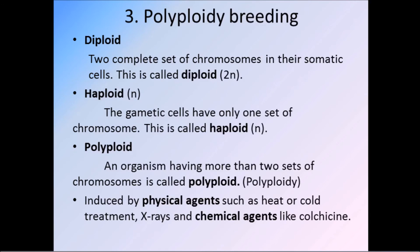Next method is polyploid breeding. 'Poly' means many. Polyploid breeding means more than two sets of chromosomes. Diploid means 2N — two complete sets of chromosomes in the somatic cells. Haploid means N — gametic cells have only one set of chromosomes. Polyploid means an organism having more than two sets of chromosomes, otherwise called polyploidy.